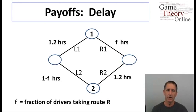If they go down the right, then the first leg of the trip, the delay there depends on how many people chose that route. Call the fraction of the drivers who go that way f. f is between zero and one. And that is the delay. The higher the fraction, the longer the delay. The second leg is more straightforward. It's a fixed delay of 1.2 hours.